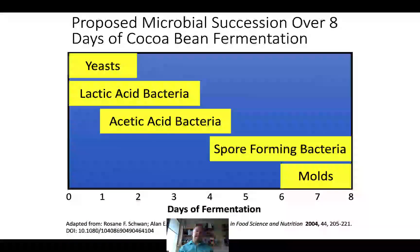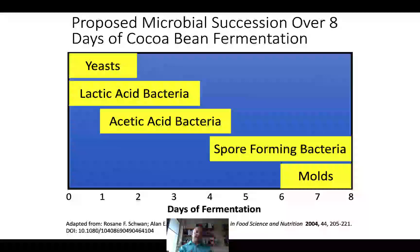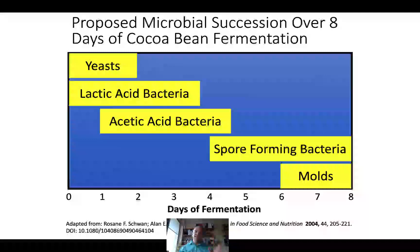Over approximately eight days, there is a succession of microbes that ferment the cocoa beans. Some are very desirable and some are not. Yeast, lactic acid, and acetic acid bacteria are very desirable—they produce flavor precursors that appear when the beans are roasted. If we get out to day four or five—which varies based on region, humidity, and temperature—we start seeing spore-forming bacteria and beyond that, mold. The first three sets of microbes—yeast, lactic acid bacteria, and acetic acid bacteria—are generally desirable; the others, not so much.